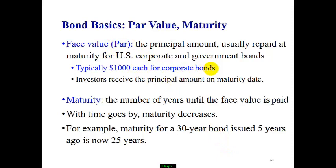A typical corporate bond has a par value or face value of $1,000. Maturity is how many years are left until the bond is paid in full. With time, maturity changes. A 30-year bond issued five years ago now has a maturity of 25 years left.